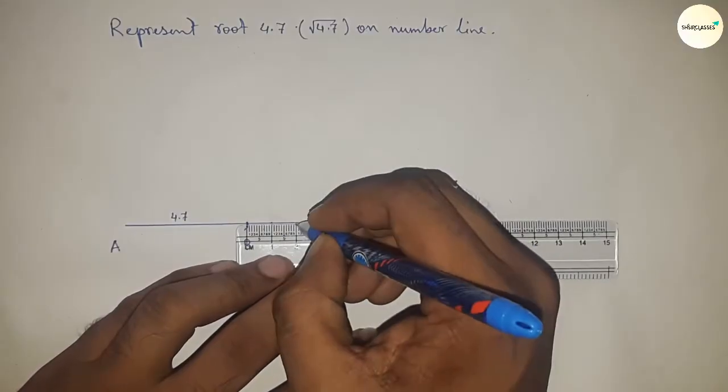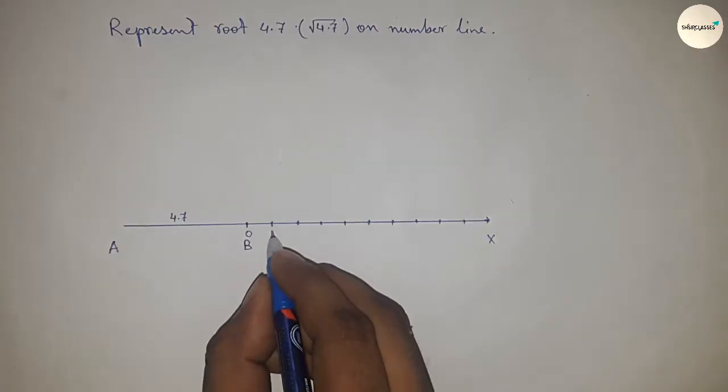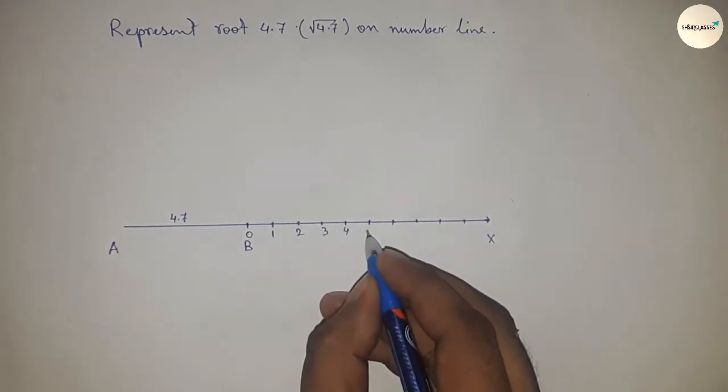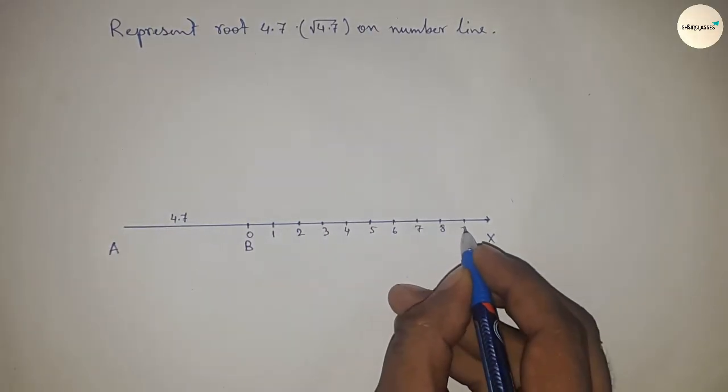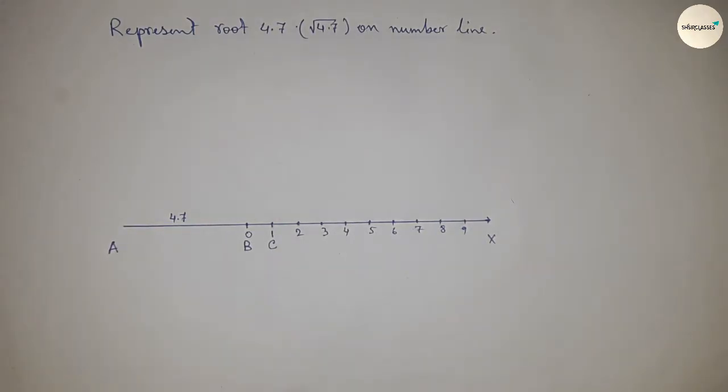Mark the numbers on the line from B to X using a scale: 0, 1, 2, 3, and so on. Mark point C. Now we need to bisect line AC.